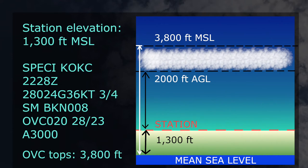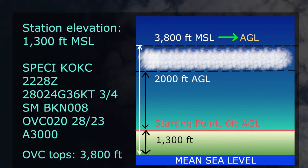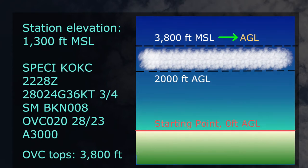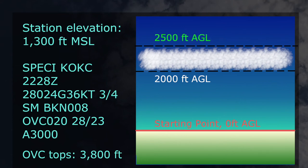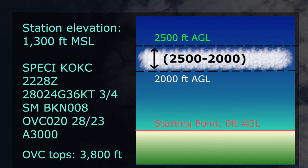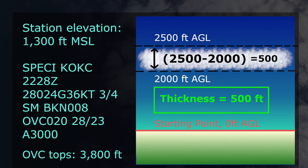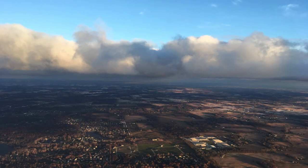Since we have the cloud base height in AGL while our cloud top height is in MSL, we need to convert the cloud top height to AGL. We do this by subtracting the 1,300-foot MSL station elevation from the 3,800-foot cloud top height. The result reveals that our cloud tops are at 2,500 feet AGL. Then we find the difference between the top and base heights of the cloud layer: 2,500 minus 2,000 gives us the overcast layer thickness of 500 feet.